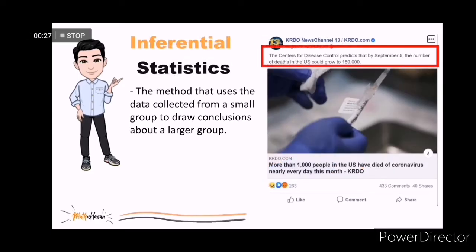Inferential statistics is the method that uses the data collected from a small group to draw conclusions about a larger group. By using this method, you can perform estimations, hypothesis testing, determining relationships among variables, and making predictions. So, the main difference of the inferential from descriptive statistics is its ability to predict an outcome to a particular topic.